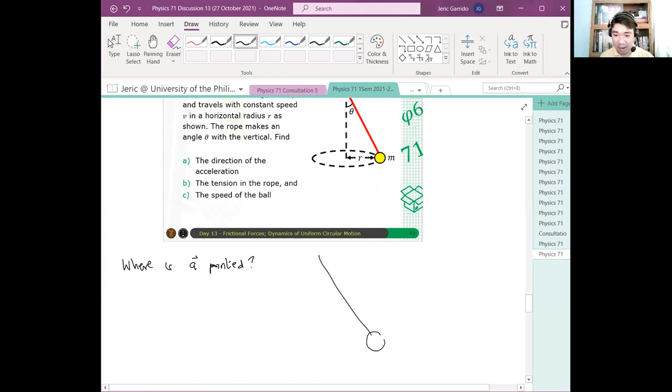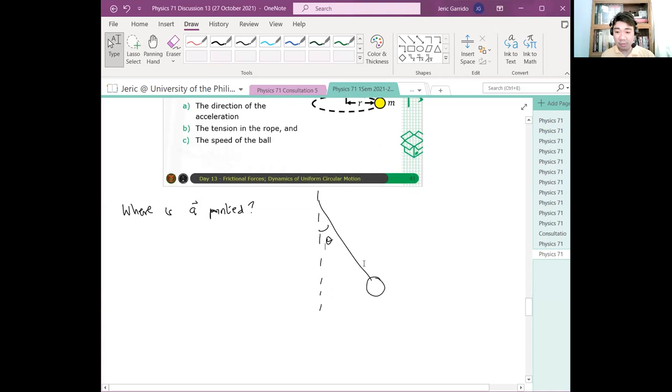So again, you have a ball. You have a box and you have a ball and this is some angle here theta. The question now is, saan nagpo-point yung radial acceleration? So again, this ball here is encircling this particular path here. Ang tanong ko ngayon, saan?